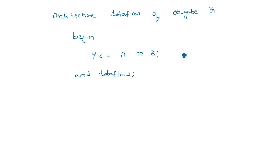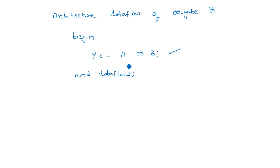Whereas in behavioral modeling, after the beginning of the architecture we write a process statement, and after several statements we get the output. If you want to write the same OR gate in behavioral modeling, you have to write out the truth table: when A equals 0 and B equals 0 then Y equals 0, A equals 0 B equals 1 then Y equals 1, and so on — four different lines with if-else conditions, all placed inside a process statement. That gives a big number of lines, while data flow modeling gives you a single line.